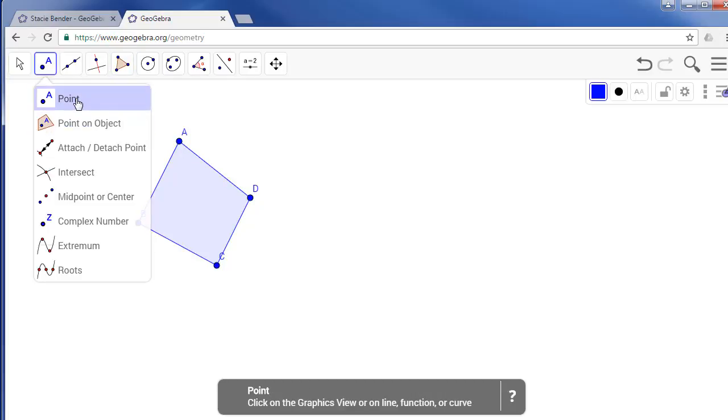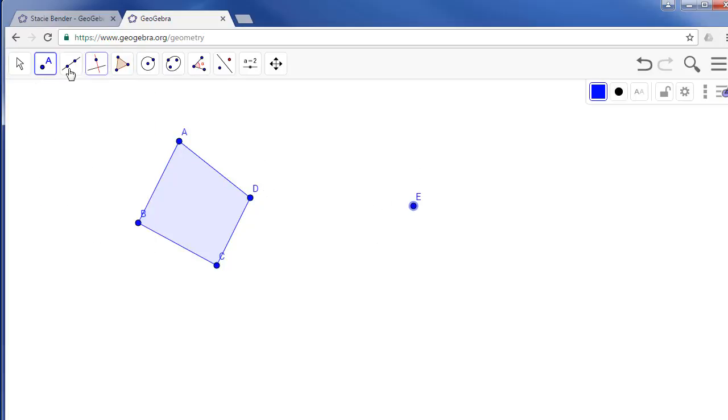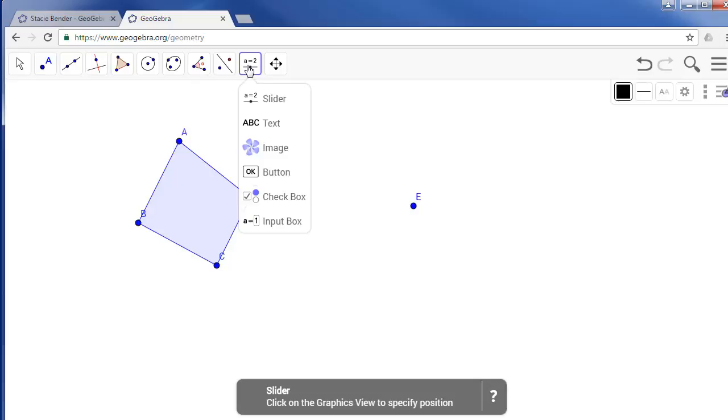We'll also need a point that we can dilate that polygon from. So go to the point tool and click a point anywhere and then we're going to use a slider to work with our scale factor.